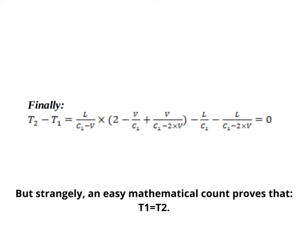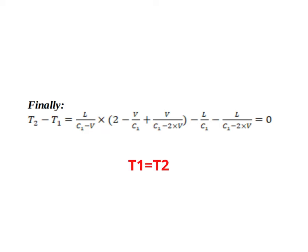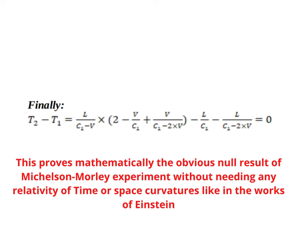But strangely, an easy mathematical count proves that t1 equals t2. This proves mathematically the obvious null result of Michelson-Morley experiment without needing any relativity of time or space curvatures like in the works of Einstein.